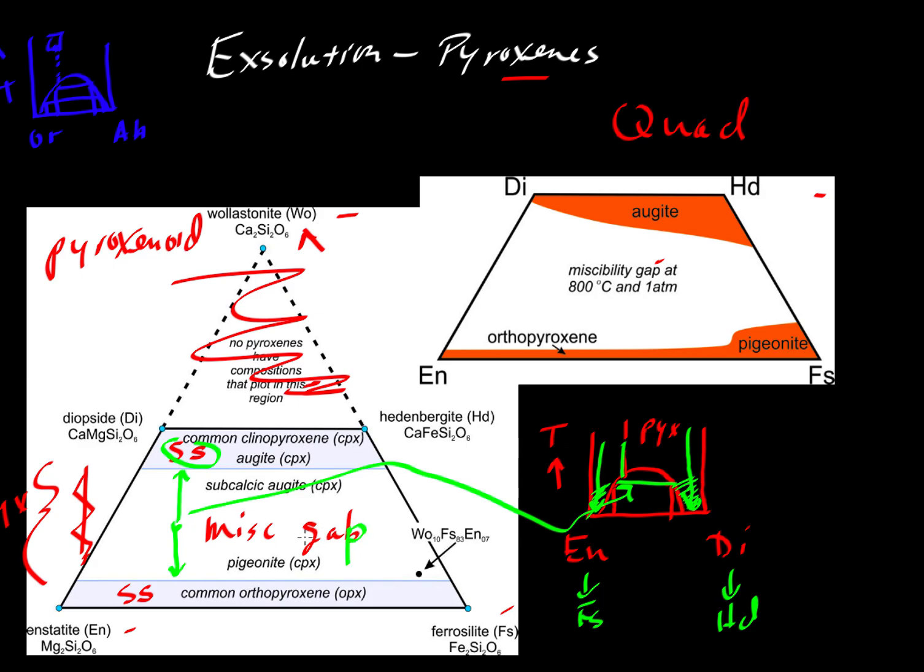That would be the miscibility gap that we would have shown already for the orthoclase-albite case, and then we would have drawn over here for enstatite and diopside. Over here is a little more realistic look at the system.